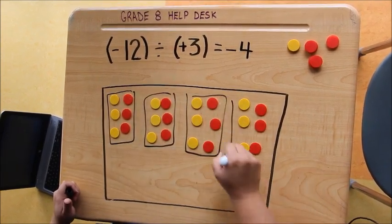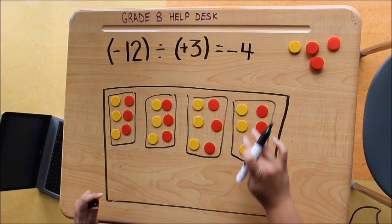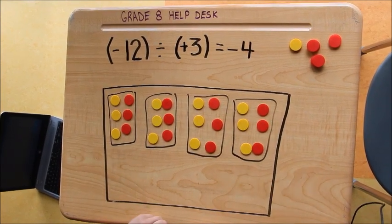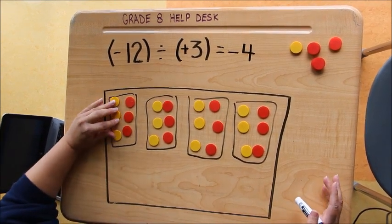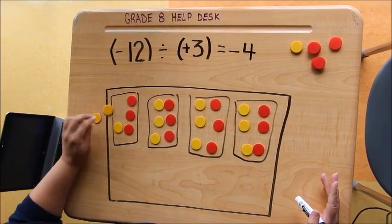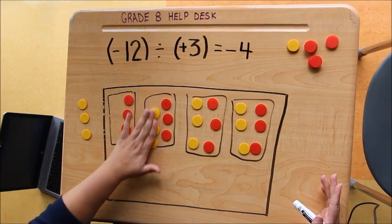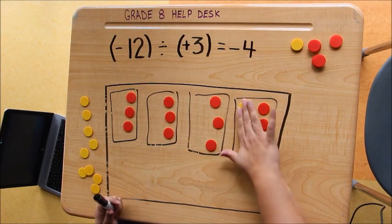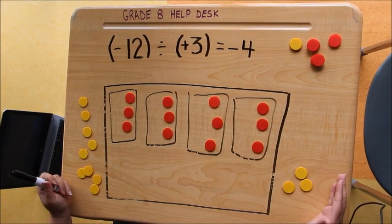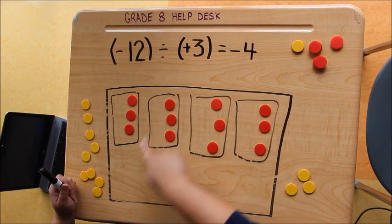What can I do so that I end up with only 12 red tiles in the bank looking at my positive 3's? Well, if I take out groups of positive 3's, so there's one group I'm taking out. There's another group I'm taking out. Take out a third group and a fourth group. So now I've taken out 4 groups of positive 3.